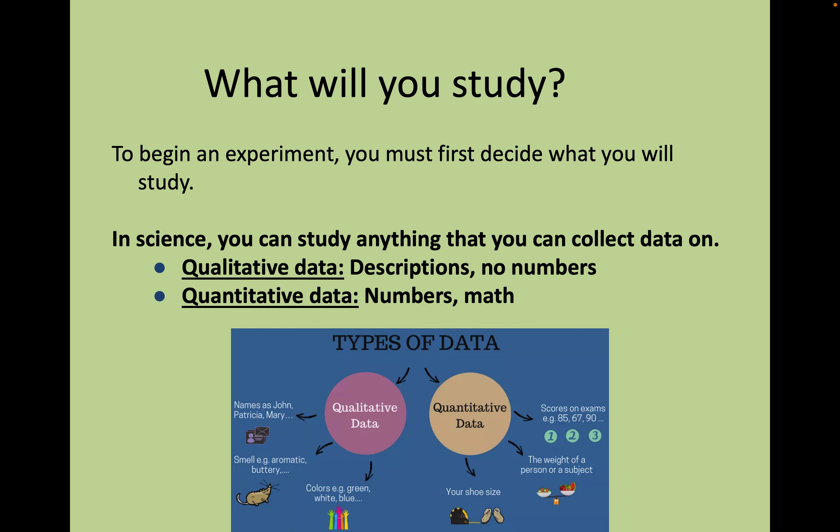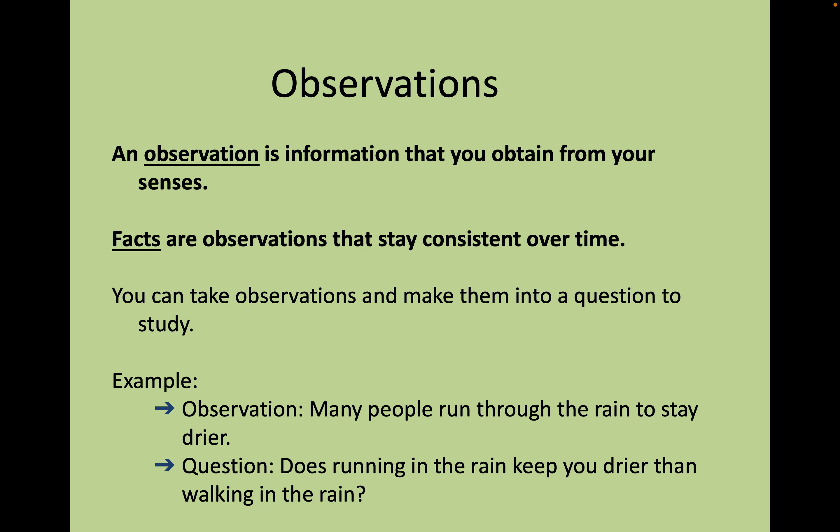Some science can have both types of data; it just depends on what you're trying to find. An observation is something you see, hear, or feel — something with your senses. Facts are observations that stay consistent over time. So if you look outside and see water falling from the sky, that means it's raining — that's an observation and a fact. What we can do with these in science, though, is turn them into a question if we see something weird.